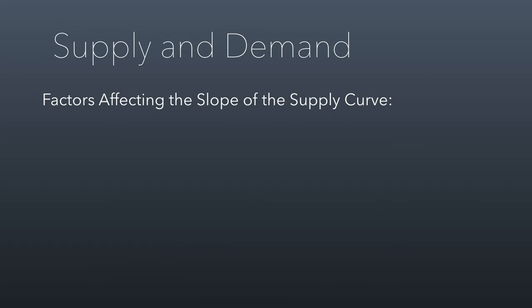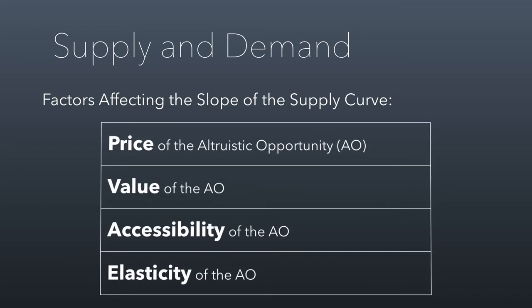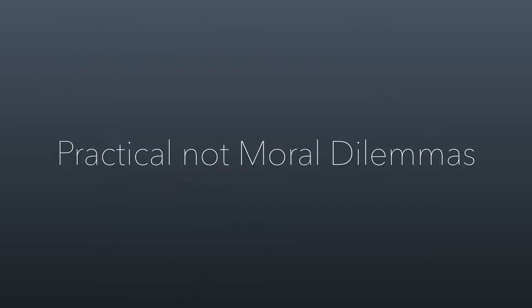There are different ways of thinking about the slope of the supply curve — what managers are producing in terms of altruistic opportunities. We can look at it from the angle of price, the angle of value, how accessible you make it to donors, and the elasticity, or in other terms, how well we can substitute between things. Managers are facing practical dilemmas here, not moral quandaries about how to get donors to change their minds.